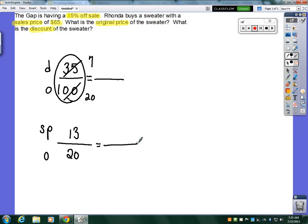Now 65 can go on the top because 65 is a sales price. And you can see what you can do to make equivalent fractions, scaling it up in this instance. I know 13 times 5 gives you 65. Whatever you do to the top, you must do to the bottom. 20 times 5 is 100.